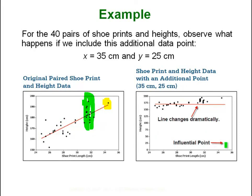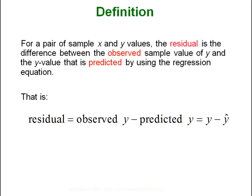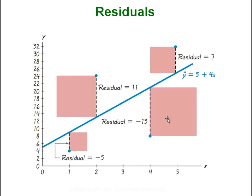For a pair of sample data x and y, the residual is the difference between the observed sample value of y and the y value predicted from your equation: residual equals observed y minus predicted y-hat. Here is a graph showing those residuals — the blue line represents the regression equation and the dots are the actual observed points. The vertical distance between the line and each observed point is the residual. In this small four-point sample, the residuals were negative 5, 11, negative 13, and 7.